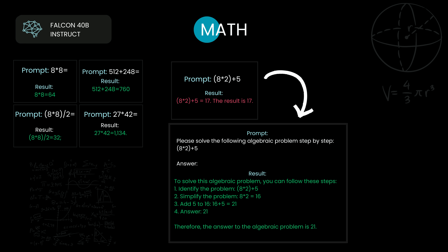Algebraic expressions are often calculated in chunks and not necessarily in a linear order of the characters seen, so large language models often struggle here. For simple math problems, Falcon 40B gets the correct answer. But as you complicate things with algebraic problems, you can often find GPT models — including even GPT-4 and GPT-3.5 — begin to struggle. ChatGPT, especially GPT-4, uses something in the background that essentially converts your math prompts into show-your-work prompts.